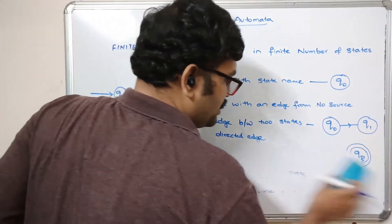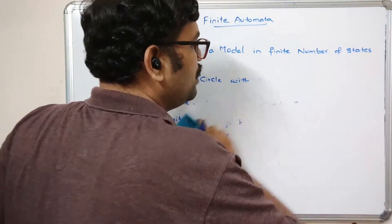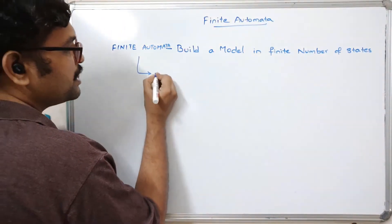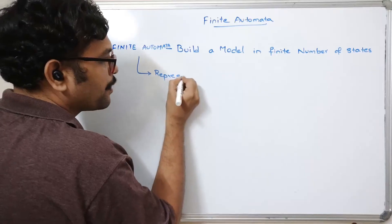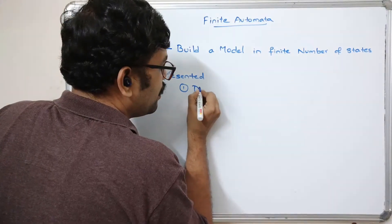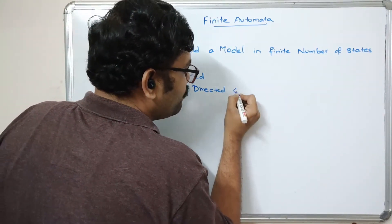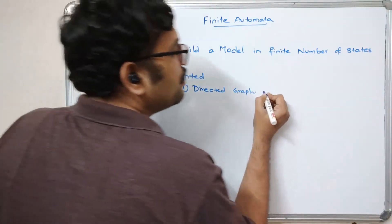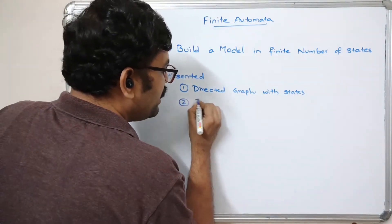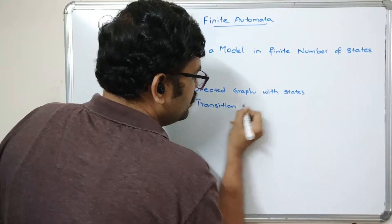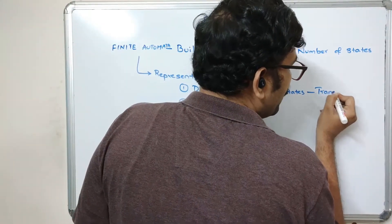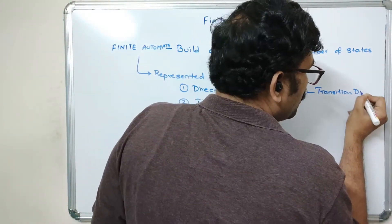This finite automata can be represented in two ways: one is by using a directed graph with states, also known as a transition diagram, and the second one is a transition table. In the transition diagram, the process will change its state based upon the input symbol.